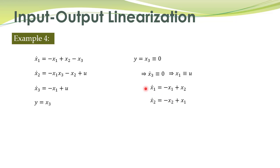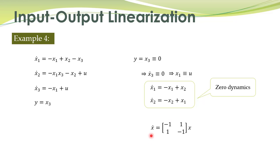The zero dynamics consist of two state equations. Fortunately this is a linear system, so checking stability is easier. We rewrite these state equations in matrix form and obtain the system matrix.